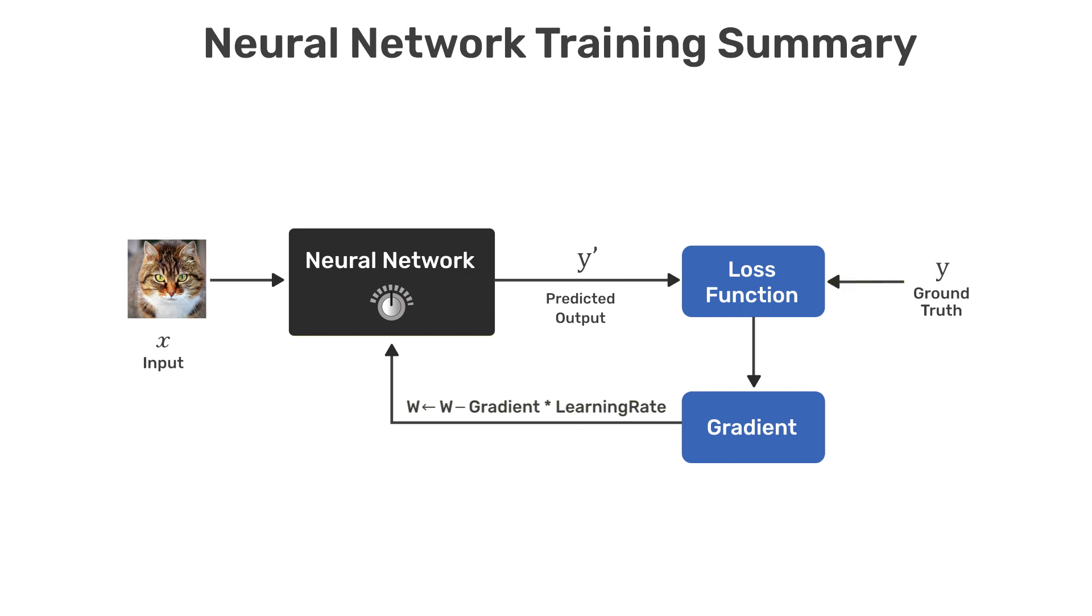We use the ground truth label Y, which is part of the training data along with the predicted output from the network to compute a loss. And notice that we don't specifically show multiple outputs from the network, but it should be understood that both Y prime and Y are vectors whose length is equal to the number of classes that the network is being trained for.